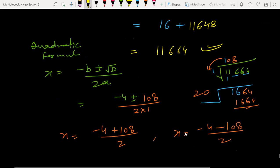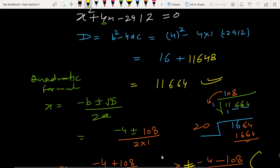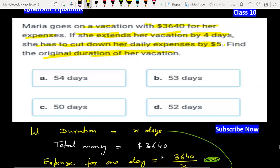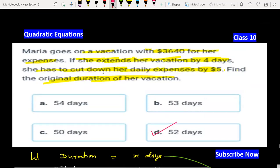X cannot be negative, therefore we reject this. X equals minus 4 plus 108 over 2, which equals 52 days. It means Maria's original duration of tour is 52 days. This is the answer. Thank you very much.